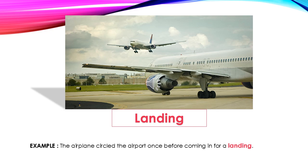And the last picture we have is landing, which is the moment that the pilot brings down the aircraft on the ground in a controlled way. Here's an example: 'The airplane circled the airport once before coming in for a landing.'